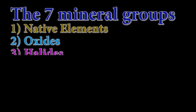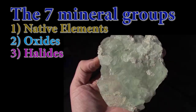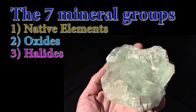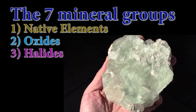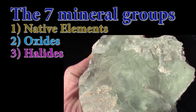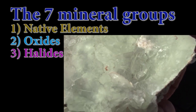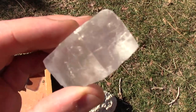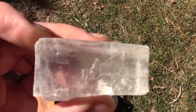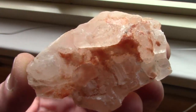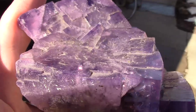The third group is the halide minerals, which are those containing a halide anion such as chlorine, fluorine, bromine, or iodine. Most of these minerals appear when sea water evaporates and fall under the chemical classification of salts, with the most common being halite, or common table salt, sodium chloride. But there's also sylvite and fluorite.